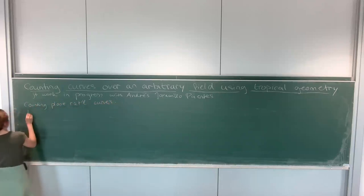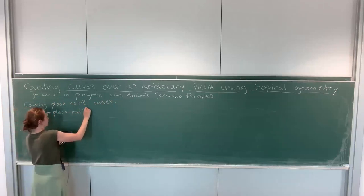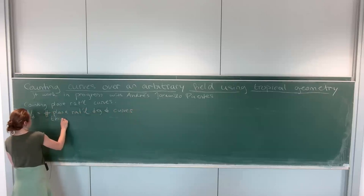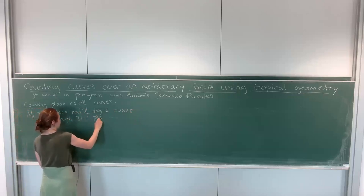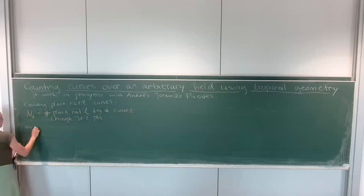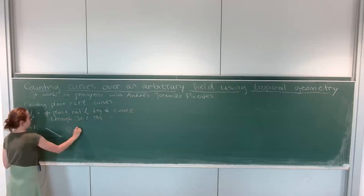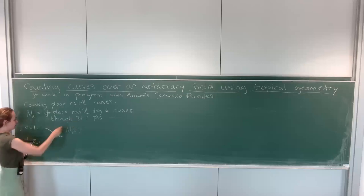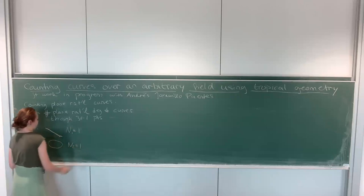So let's start with counting. What I want to count today is, I'll restrict to the case of rational curves. And for this, I want Nd to be the number of plane, rational, degree d curves through given 3d minus 1 points. Let's do a very easy example. When d equals one, then 3d minus 1 is two, so we want degree one curves, so lines through two different points, and there's only one, so N1 is one. When d equals two, then we want to count conics through five points, and you've probably seen this before, that a conic is given by the system. You can do this with linear algebra. So there's only one, so N2 is one.